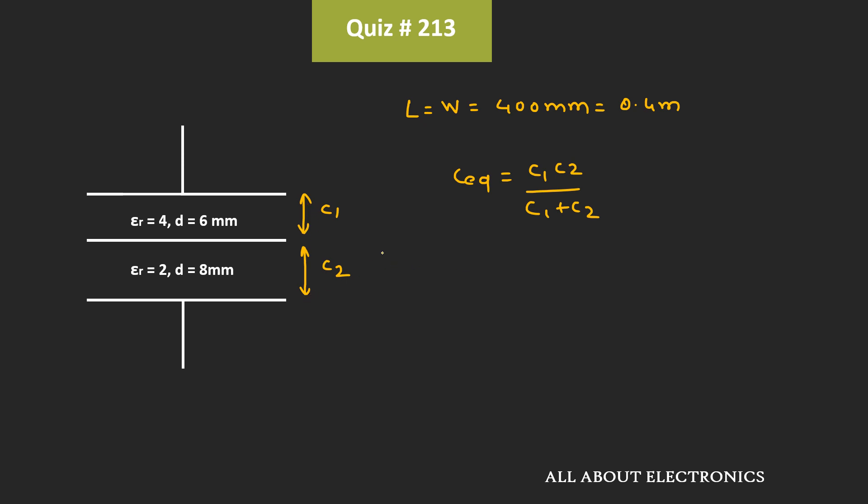So we need to find the value of C1 and C2. This capacitor C1 can be given as ε1 times A divided by D. That means ε0 times εR1 times A divided by D, where A is the area of these capacitor plates. That means C1 is equal to 8.85 times 10 to the power minus 12 times 4 times 0.4 times 0.4.